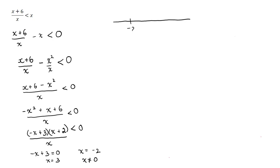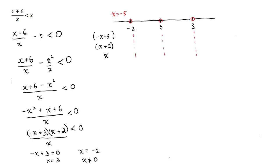We put negative 2, 0, and 3 on a number line. Notice there's no equal sign in this inequality, so none of those can be included — we draw them as open circles. Writing down the factors to analyze signs: for something less than negative 2, pick x equals negative 5. In the first factor there's a double negative, so it becomes positive 5 plus 3, which is positive. Negative 5 plus 2 is negative, and the denominator is negative. Overall: positive times negative divided by negative gives positive — two negatives make positive.